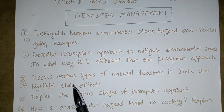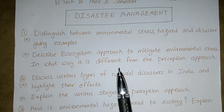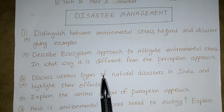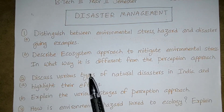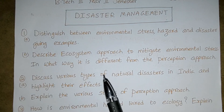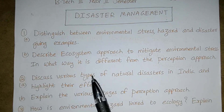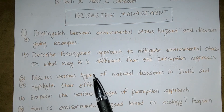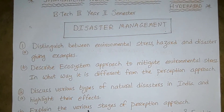Instead of writing lengthy paragraphs of theory and wasting time in the examination, it is better to use diagrams and maps. With the help of maps, you can explain the disaster system. Use block diagrams to show the classification and hierarchy of how stages take place in disaster management.